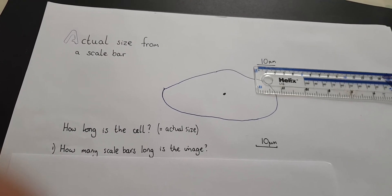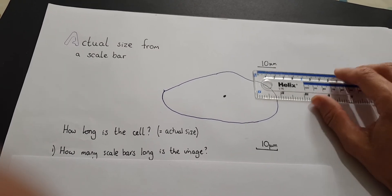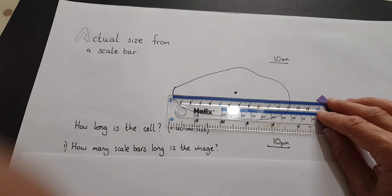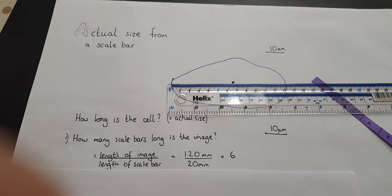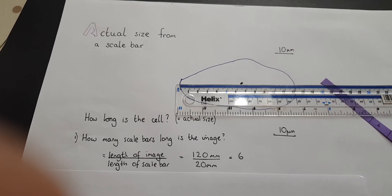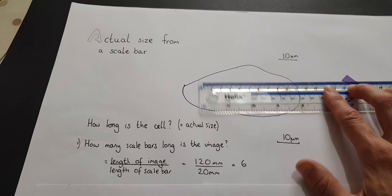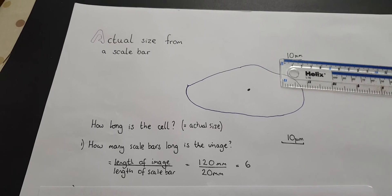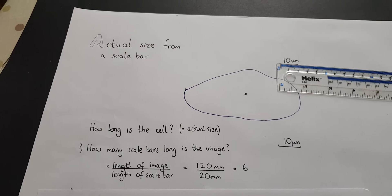You don't need to use the magnification equation for this. What you need to do is find out how many scale bars long the image is. To do that, you measure the length of the image in millimeters — in this case, 120 millimeters — and you measure the length of the scale bar in millimeters, in this case 20 millimeters. So you do 120 millimeters divided by 20 millimeters, which equals 6.